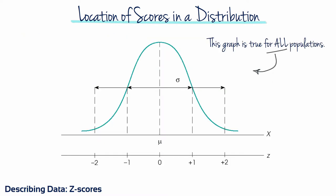This figure shows a population distribution with various positions identified by their z-score values. Notice that all z-scores above the mean are positive, and all z-scores below the mean are negative.